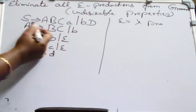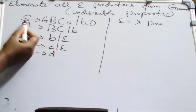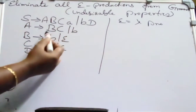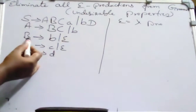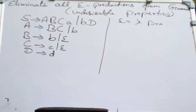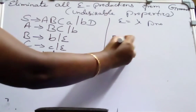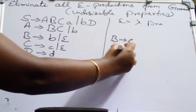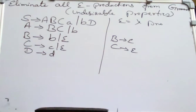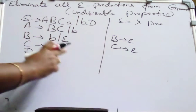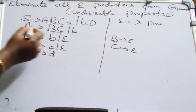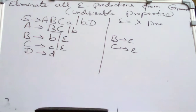In this given grammar, if you observe from the starting state, S derives A, B, C, or A or B, D. We have two productions. For B and C, if you observe, we have epsilon productions. So we have B derives epsilon and C derives epsilon. These two productions. So now B and C — who derives them? They are derived by A.